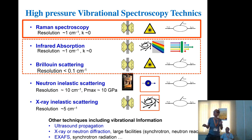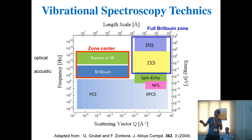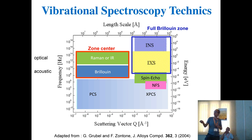Since k ≈ 0 for light, we deal with values of k very close to the center of the Brillouin zone. If you need good energy resolution, you move toward Brillouin spectroscopy. If you stay on the optical phonons, you work with Raman spectroscopy.